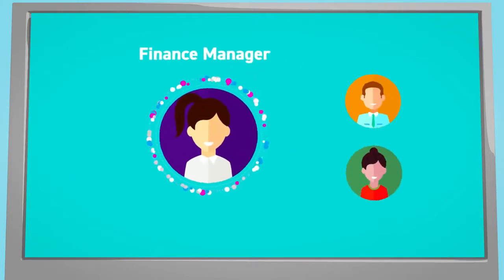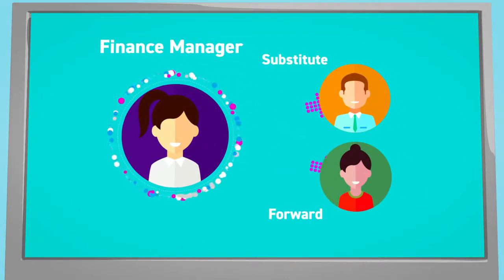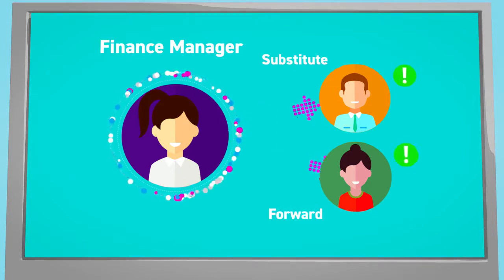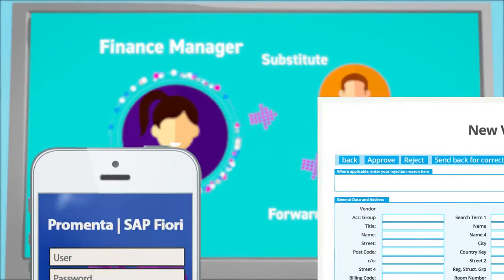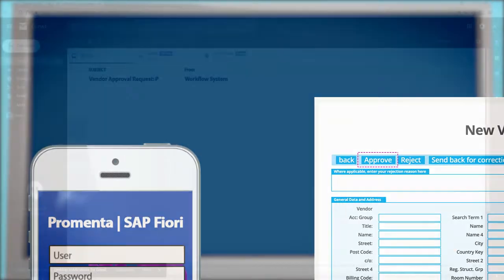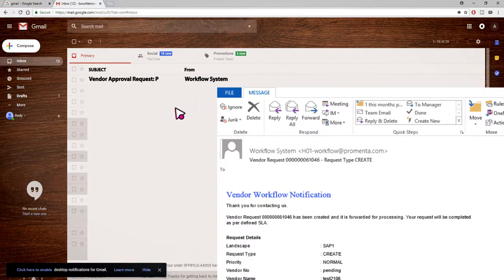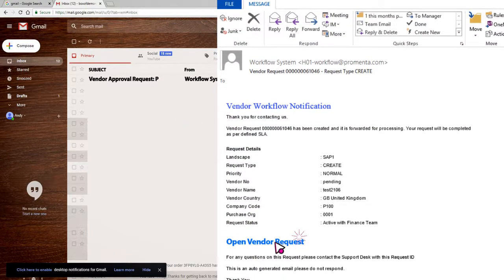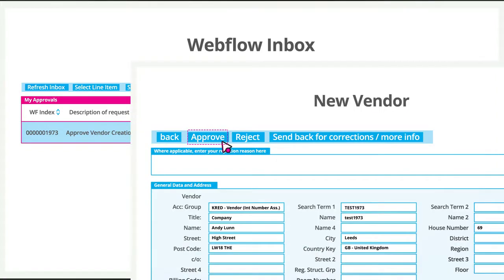Users can set up substitute approvals or forward requests. Email notifications are automatically sent to the right people, delivering automation and compliance benefits. Approvals can be handled through the web browser or your mobile device. For web browser approvals, users receive an email notification where they can click and open the approval item. Users can also access and approve requests from their web flow inbox.